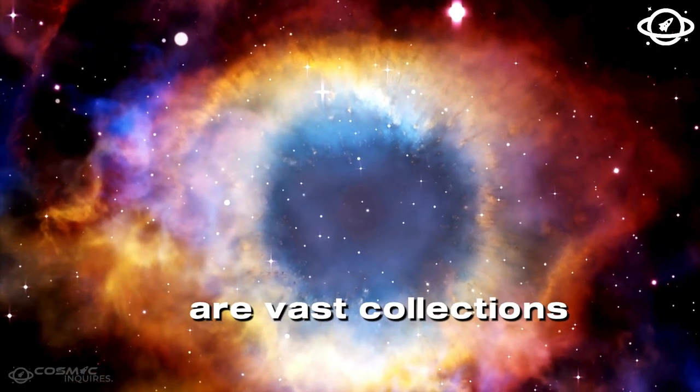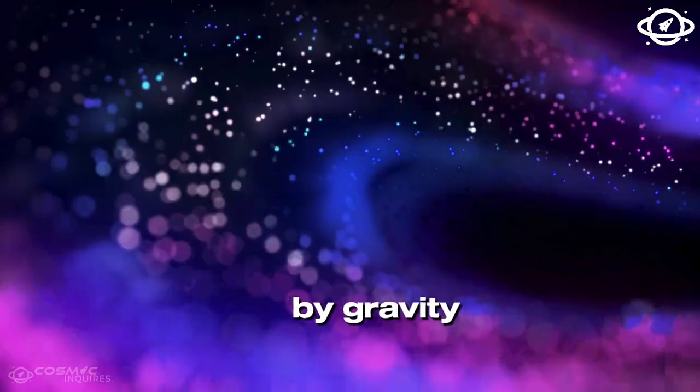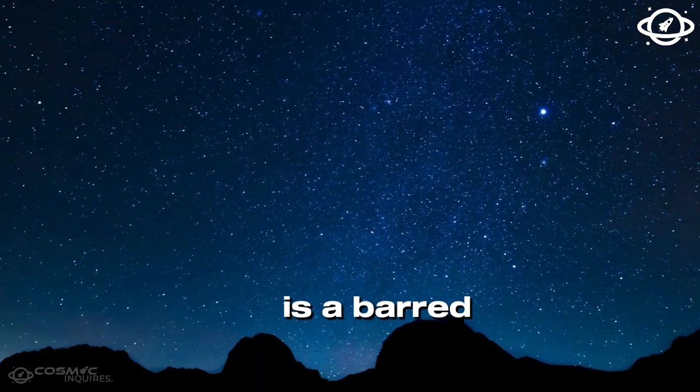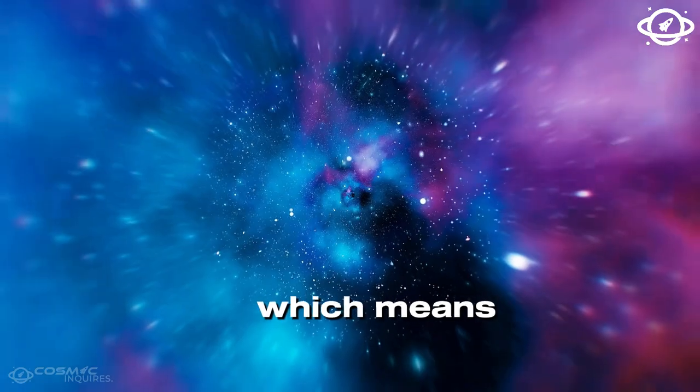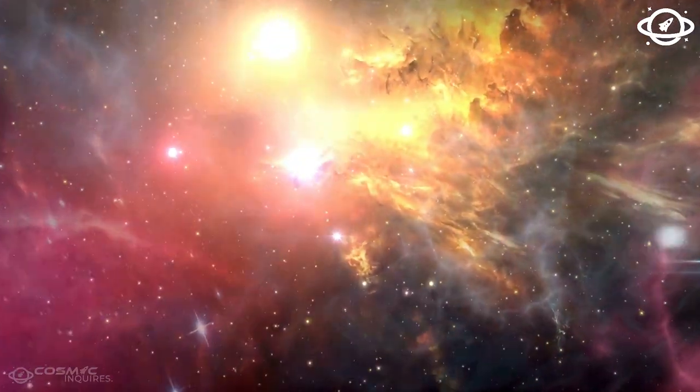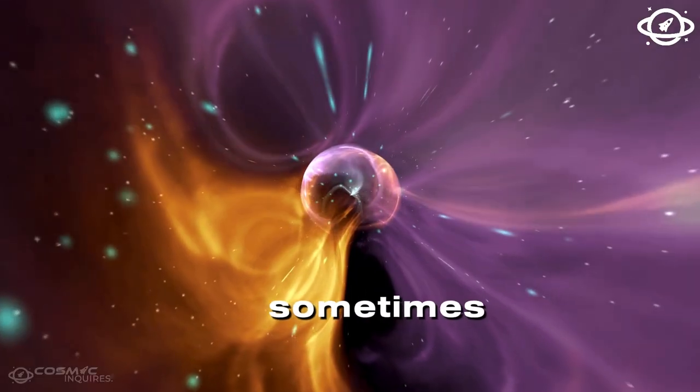Galaxies are vast collections of stars, gas, dust, and dark matter, all held together by gravity. Our own galaxy, the Milky Way, is a barred spiral galaxy, which means it has a central bar-shaped structure composed of stars. Galaxies are constantly moving and interacting with each other. Sometimes they even collide.